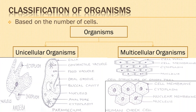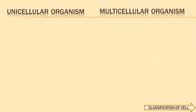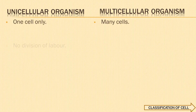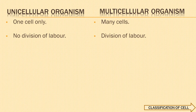Now, what do you observe in the section of an onion peel in the diagram shown? Yes, there are a number of cells which are arranged in a particular manner. Each cell has a prominent nucleus, cytoplasm, cell membrane and cell wall. The unicellular organisms, since they are composed of only one cell, that single cell has to perform all body activities. We say there is no division of labour.